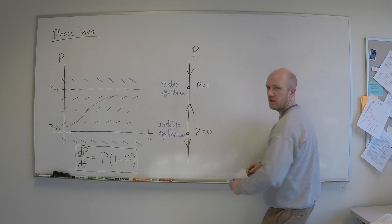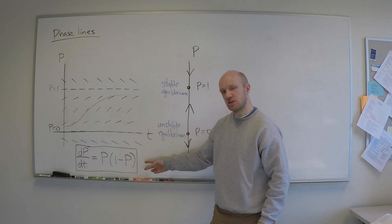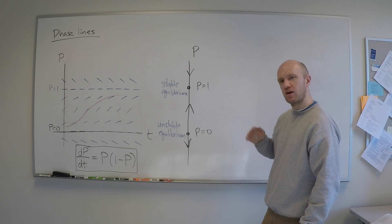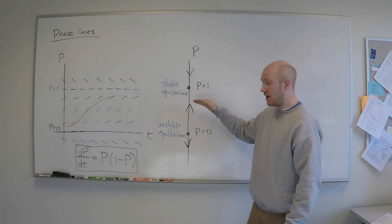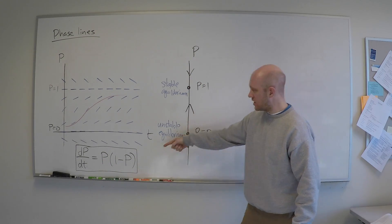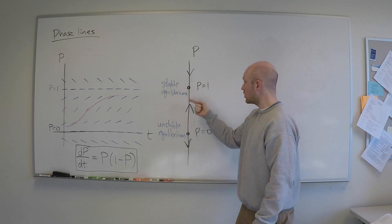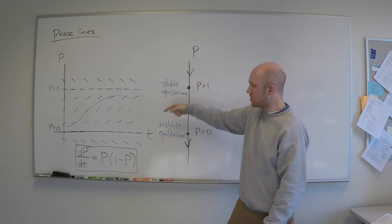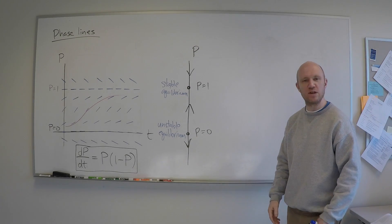I'll give you something called the metaphor of the rope. Think of the phase line like a rope, and the differential equation dp/dt = p(1 minus p) is like your gym instructor on the ground yelling instructions on how to climb this rope. The instructor observes what the value of p is — where you are on the rope — and yells out whether you should go up or down and how fast. For example, if you were at p equals 1, he would yell 'stay where you are' because you're at an equilibrium. If you were above it, he would yell out what dp/dt is, and you would move down the phase line. This is the metaphor of the rope — another way of thinking about the information the phase line contains.